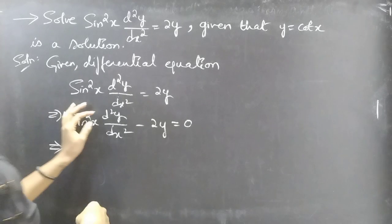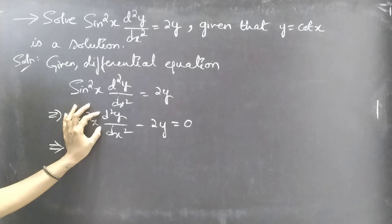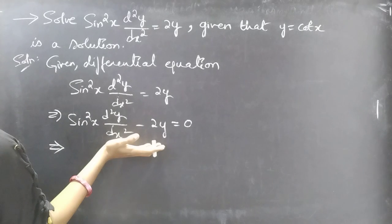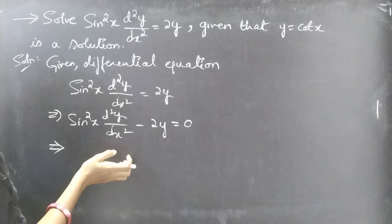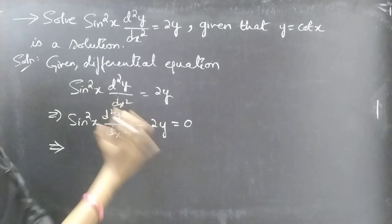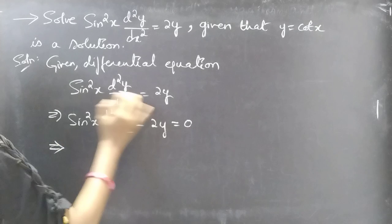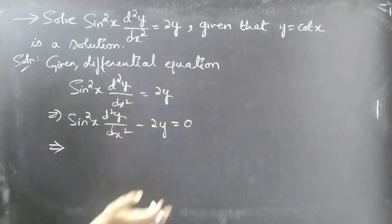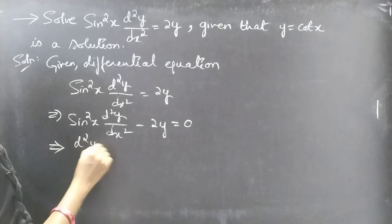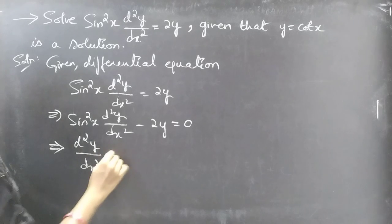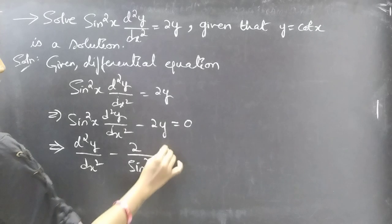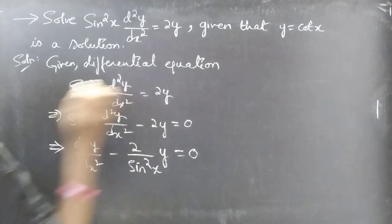Now make the coefficient of d²y/dx² equal to unity. We divide both sides of the equation by sin²x, or equivalently multiply by 1/sin²x. Then we get d²y/dx² - (2/sin²x)·y = 0.